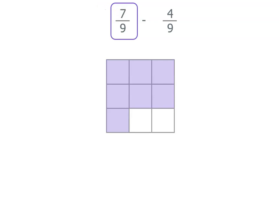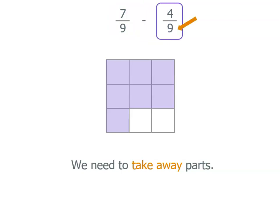But we need to take away or subtract 4 ninths. So rather than having another model here, we just take them away. You could cross them out or rub them out. We're going to be taking away 4 of the ninths.